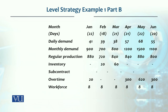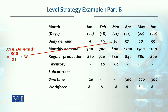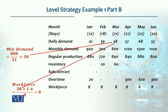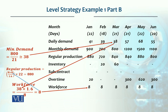In this plan, previously we used subcontracting, but now we are using overtime. The minimum demand is 38 units, which is in March — calculated as 800 divided by 21 days, giving 38. Number of workers: 38 × 1.6 ÷ 8 = 8 workers. Regular production for January with 8 workers: 8 × 8 hours ÷ 1.6 = 40 units per day, multiplied by 22 days = 880 units.